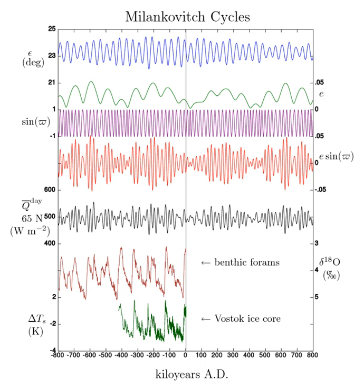Other bodies in the solar system undergo orbital fluctuations like the Milankovitch cycles. Any geological effects would not be as pronounced as climate change on the Earth, but might cause the movement of elements in the solid state. Mars has no moon large enough to stabilize its obliquity, which has varied from 10 to 70 degrees. This would explain recent observations of its surface compared to evidence of different conditions in its past, such as the extent of its polar caps.